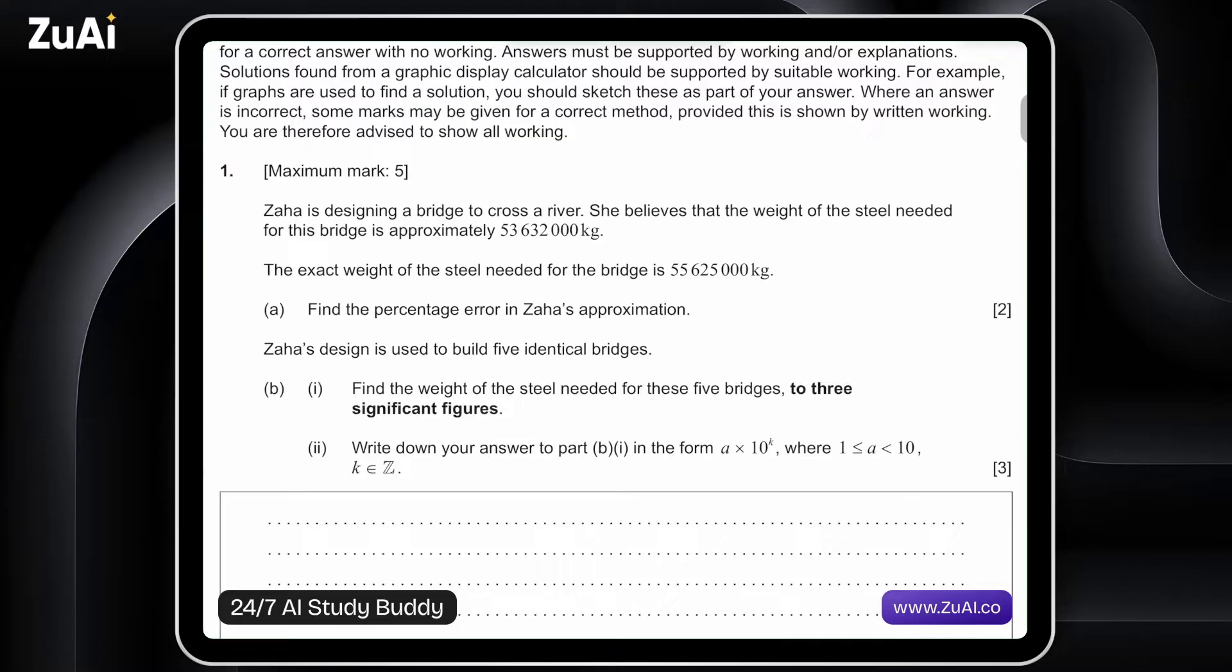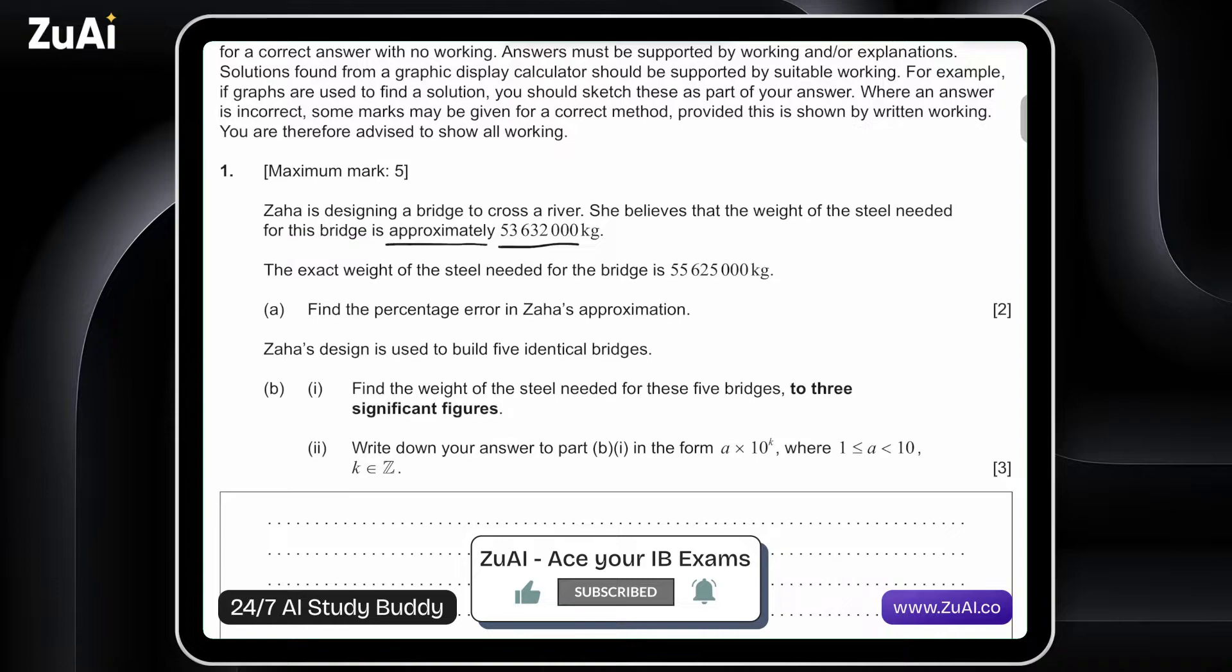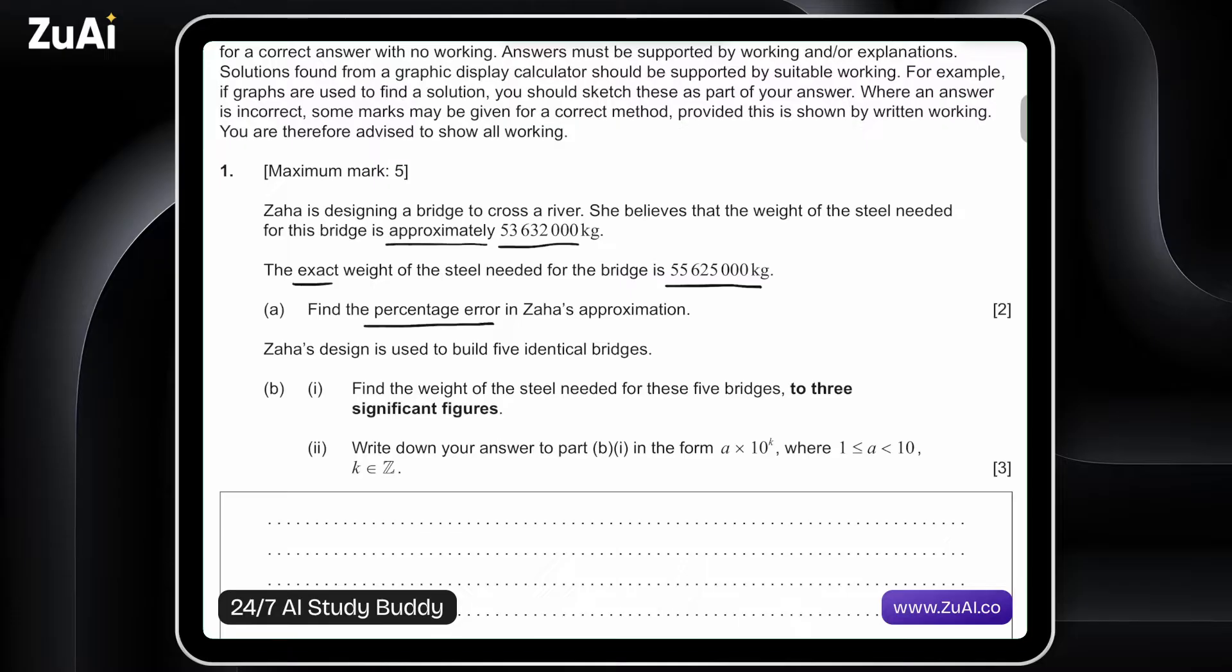Zaha is designing a bridge to cross a river. She believes that the weight of the steel needed for this bridge is approximately 53,632,000 kilograms. The exact weight of the steel needed for the bridge is 55,625,000 kilograms. Find the percentage error in Zaha's approximation. So for this question, we're given an approximate value, some estimate, and an exact value right here. And percentage error, remember, is given to us in the formula booklet.